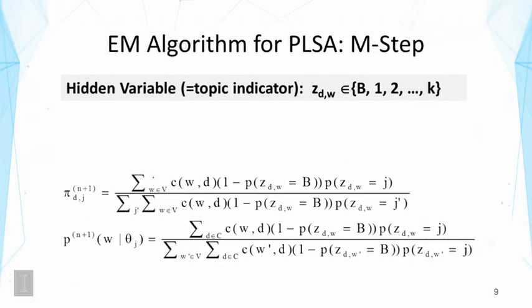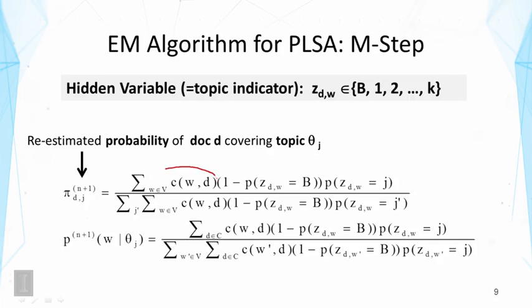What about the M-step? We may recall the M-step is to take advantage of the inferred Z values to split the counts and then collect the right counts to re-estimate the parameters. In this case, we can re-estimate our coverage probability. And this is re-estimated based on collecting all the words in the document. That's why we have the count of the word in the document and sum of all the words. And then we're going to look at to what extent this word belongs to the topical theta sub j. And this part is our guess from the E-step.